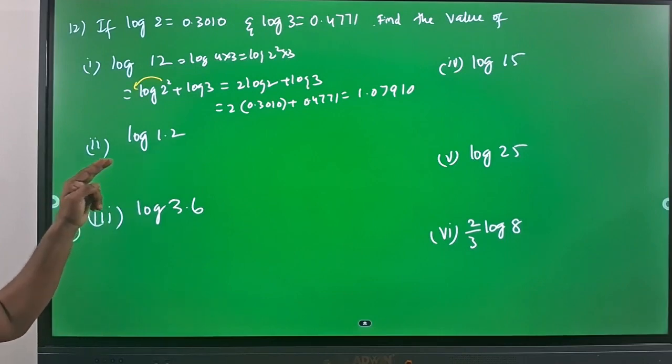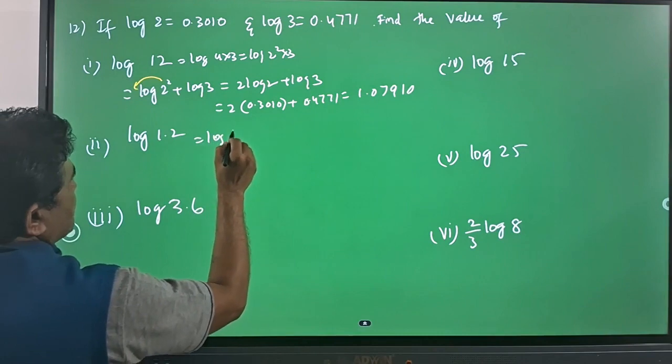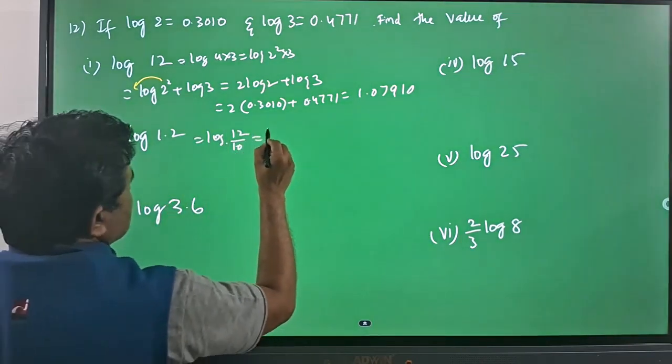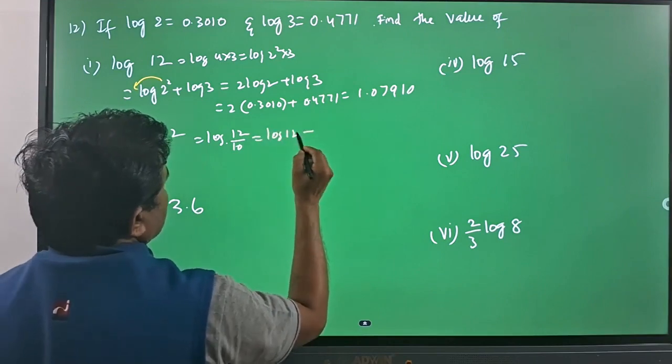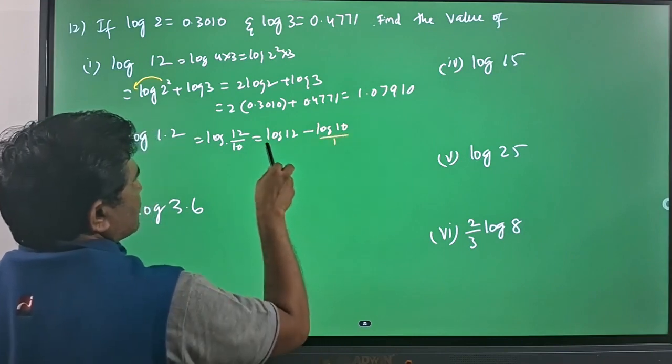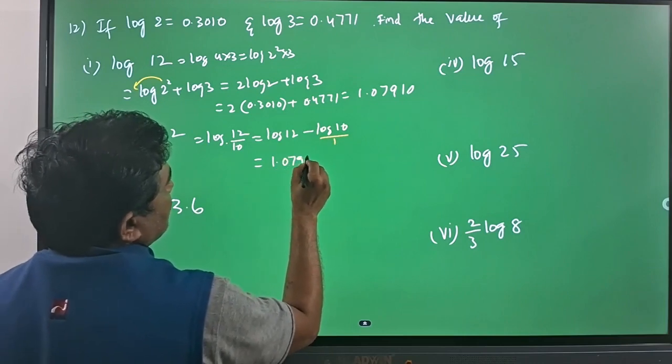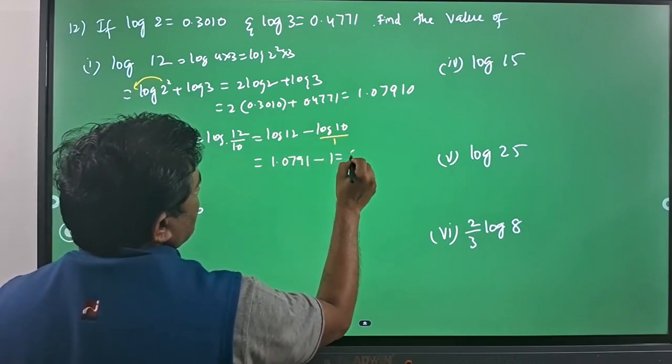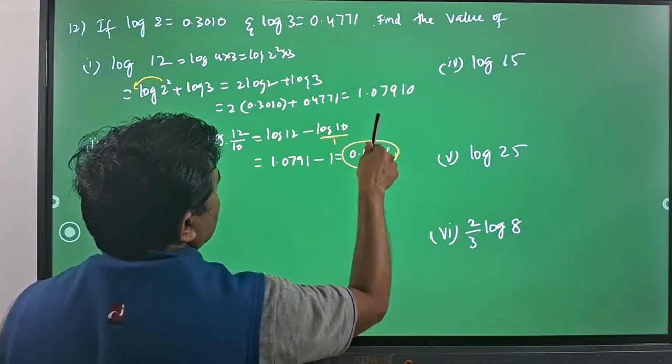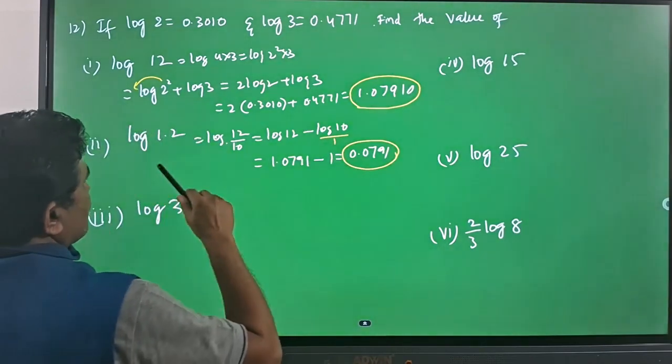And here, log 1.2 can be written as log 12 by 10. So this can be taken as log 12 minus log 10. This log 10 will be 1. So log 12 value is 1.0791 minus 1, you will have 0.0791. This is the log 1.2 value.